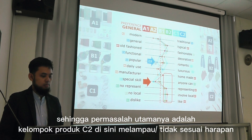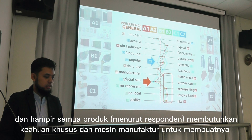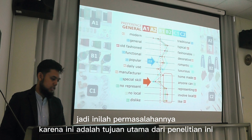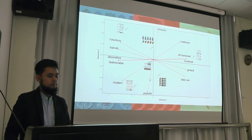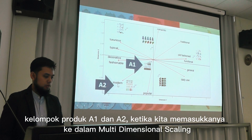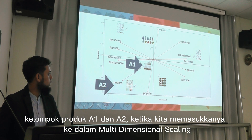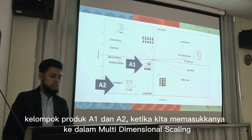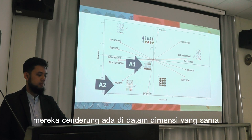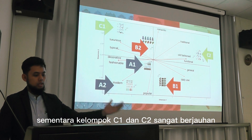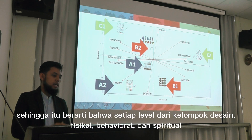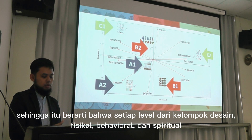The main problem is product C2, which is beyond expectation — out of expectation. And almost all products need special skill, and most require a manufacturer. This was actually the main purpose of this research. When we put the data on a multi-dimensional scale, product A1 and A2 tend to be in the same dimension, but B1 and B2 are from different dimensions, and C1 and C2 are really different dimensions. This means that the main purpose of the design model — the level of design and physical, behavioral, and spiritual aspects — is not only represented, but how the designer puts it by their intention.